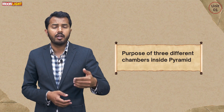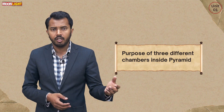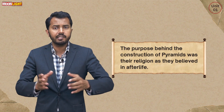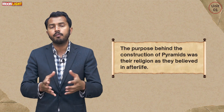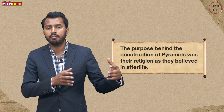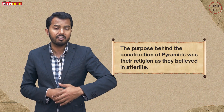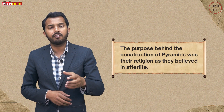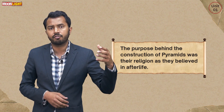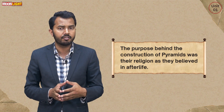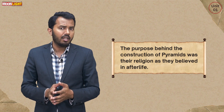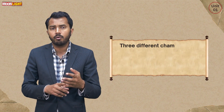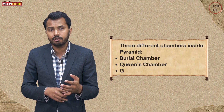First of all, if we talk about the overall general prime objective behind the construction of pyramids, it was religion — as they believed in afterlife. So this was the prime objective behind the construction of pyramids. Now let's have a look at the three different chambers. One chamber was known as the burial chamber.